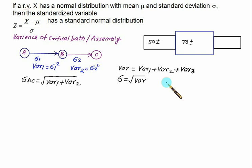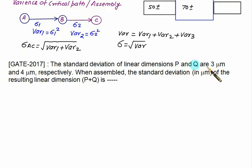We have one recent question from 2017. The standard deviation of linear dimension of P and Q are three microns and four microns. When assembled you have to find out the standard deviation of the resultant dimension. Standard deviation of part P is three micron so variance will be equal to 9 for part P. The standard deviation for part Q is four micron so variance of part Q is equal to 4 square which is 16. When assembled you have to add the variance.